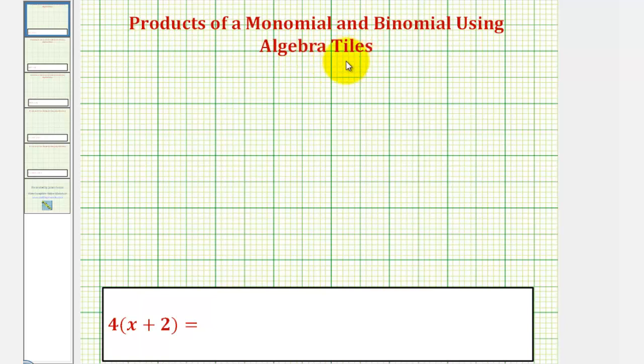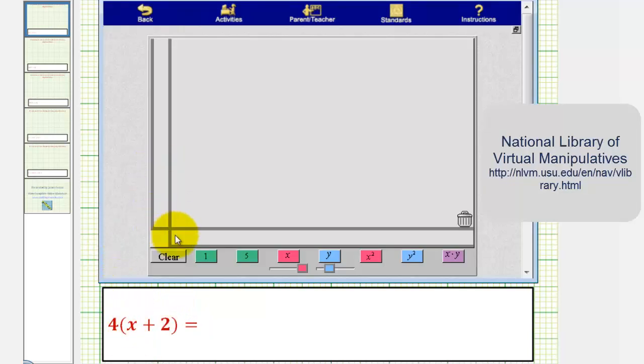So for our first example, we have four times the quantity x plus two. So using algebra tiles, we'll model four vertically, and we'll model x plus two horizontally.